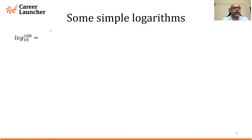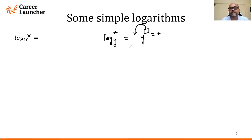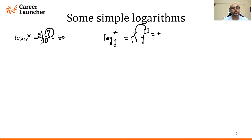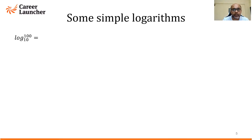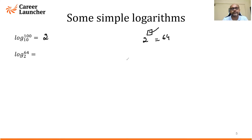Some simple logarithms: if I ask what is log 100 to the base 10, remember we use only the definition — the answer should be 10 to the power of what gives me 100. Clearly 10 squared is 100, so the answer is 2. Log 100 to the base 10 is 2. Similarly, log 64 to the base 2 means 2 to the power of what gives me 64. Since 2 to the power of 6 is 64, the answer is 6.